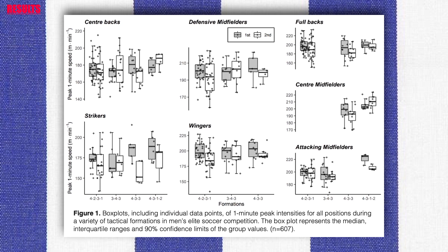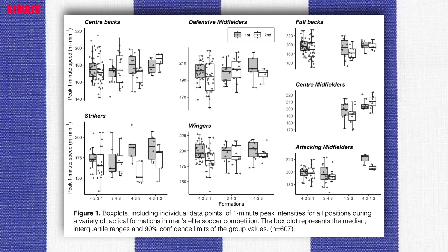Defensive midfielders had greater second half peak intensities in the 3-4-3 formation compared to the 4-2-3-1 formation. Conversely, in the 4-3-1-2 formation, center backs had greater second half peak intensity in the 1, 3, and 5 minute moving averages. Center backs also had greater second half peak intensities compared to the first half in the 1 and 2 minute moving averages when playing in a 3-4-3 formation.